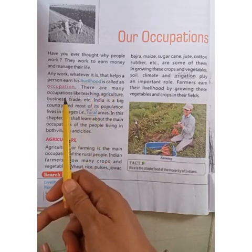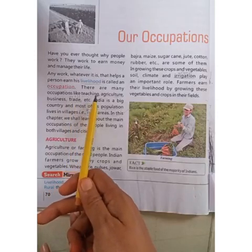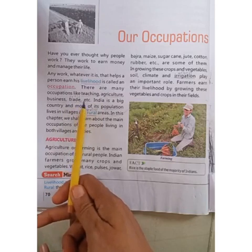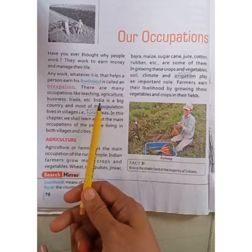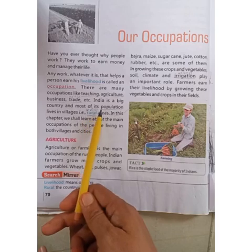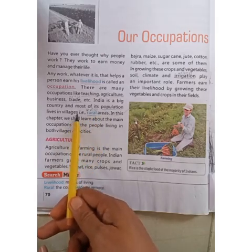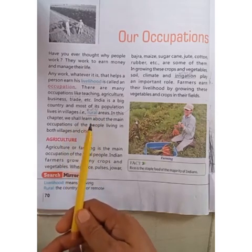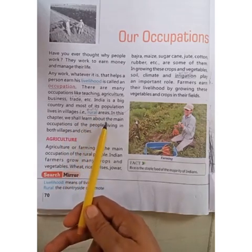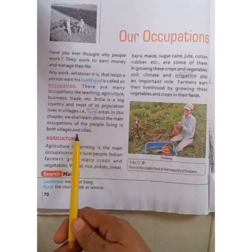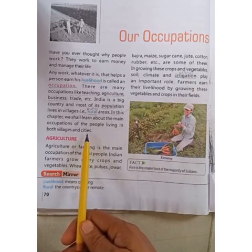There are many occupations like teaching, agriculture, business, trade etc. India is a big country and most of its population lives in villages — for example, rural areas. In this chapter we shall learn about the main occupations of people living in both villages and cities.